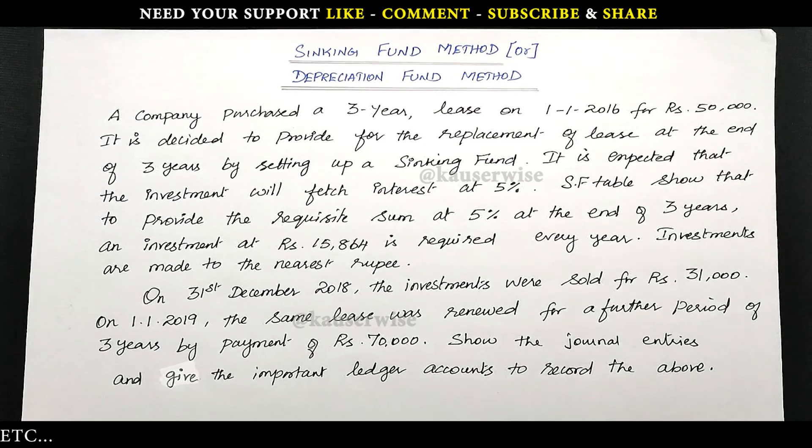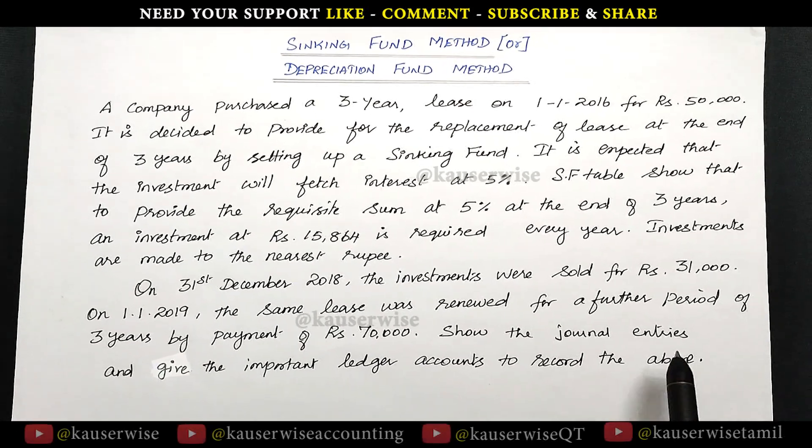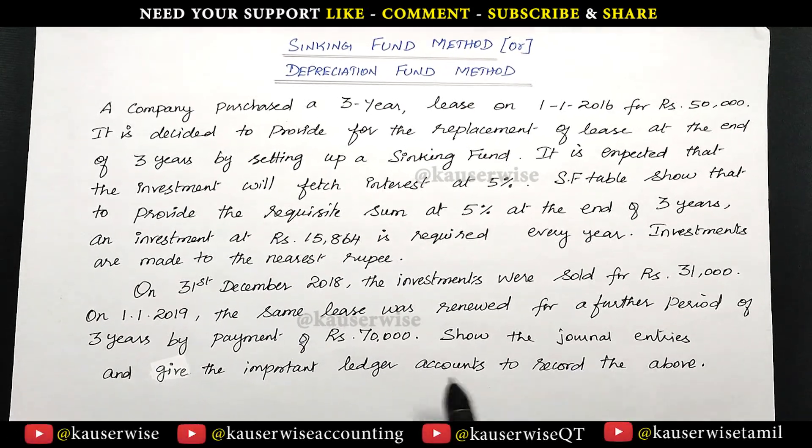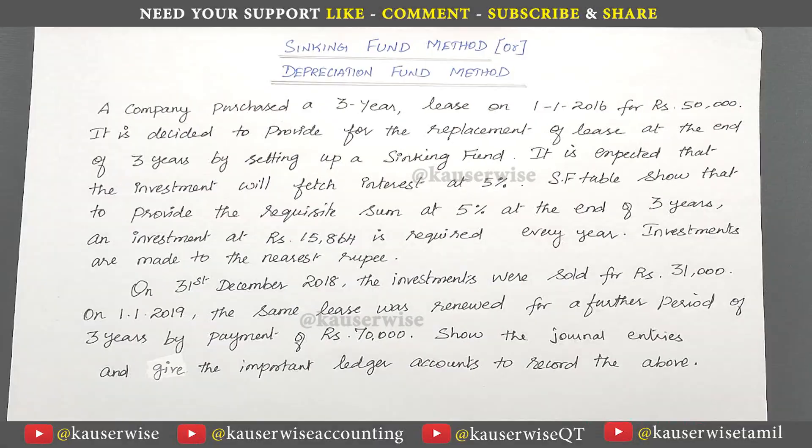On 31st December 2018, that is after 3 years, the investments were sold for Rs. 31,000. On 1st January 2019, the same lease was renewed for a further period of 3 years by payment of Rs. 70,000. We are required to show the journal entries and give the important ledger accounts to record the above. We are going to make journal entries first and then post into necessary ledger accounts.